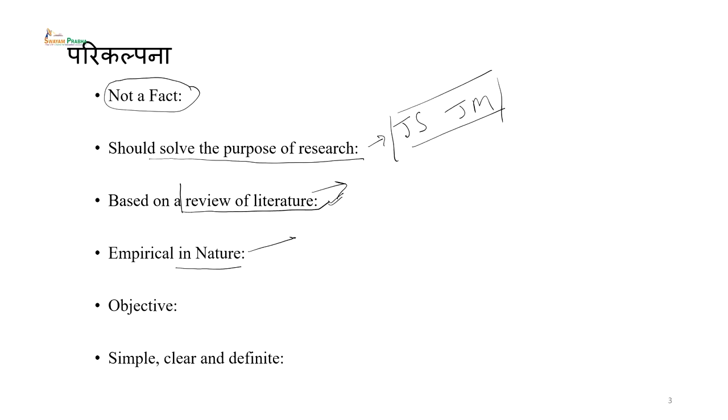Next characteristic है — empirical। Empirical का अर्थ है कि जो hypothesis हम develop करें उसे हम data के माध्यम से जान सकें, परख सकें, उसका meaning draw कर सकें। एक अच्छी hypothesis वो होनी चाहिए जिसे हम empirically collect किए गए data के basis पर accept या reject कर सकें। यदि empirically data collect न कर सकें और hypothesis को examine या reject न कर सकें तो वो एक अच्छी hypothesis की characteristic नहीं कहलाती।